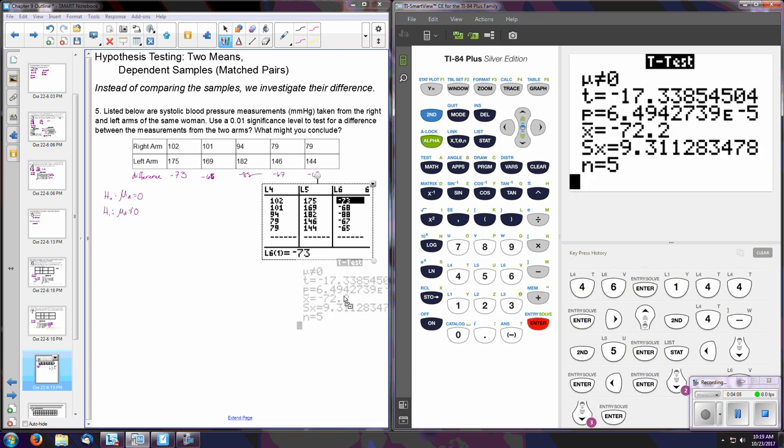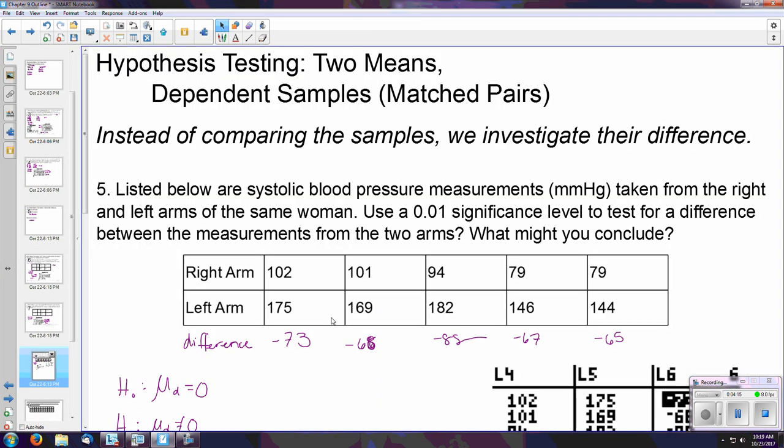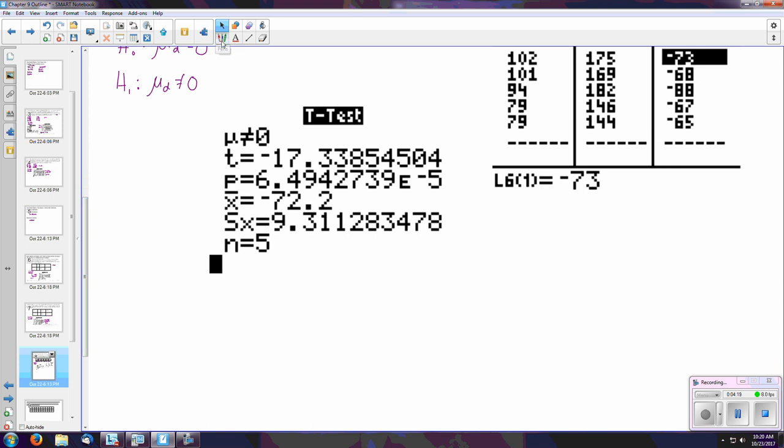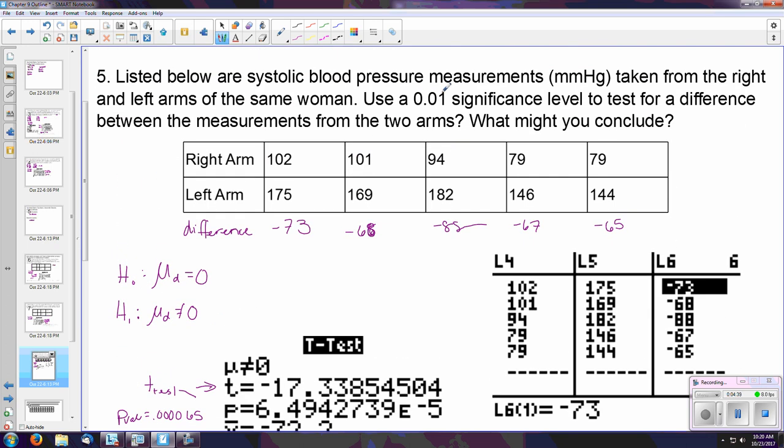Upon calculation we can see that we have a very extreme test result here. From all of that that we found, remember it's a 0.01 significance level test. We have a t-score of negative 17.34, so it's our t-test, and a p-value of 0.000065. Our p-value is substantially smaller than alpha.